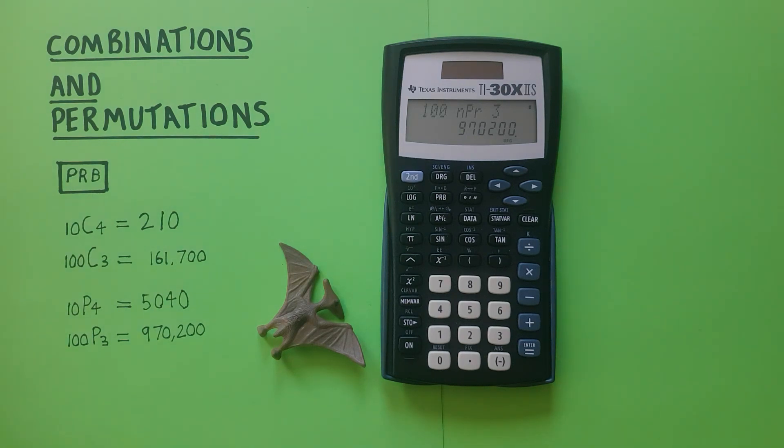So there we go, there are 970,200 possible permutations of choosing 3 from a set of 100.